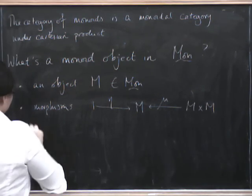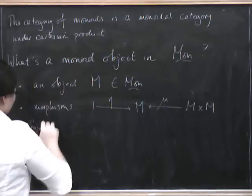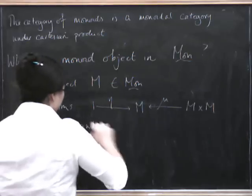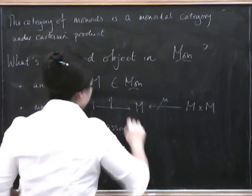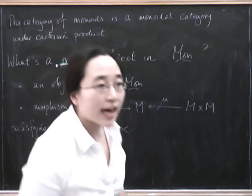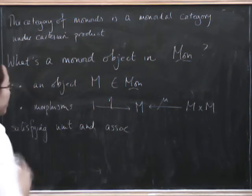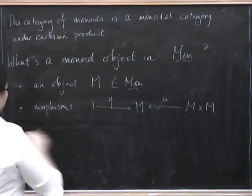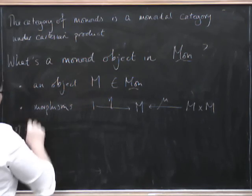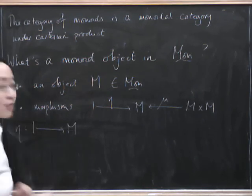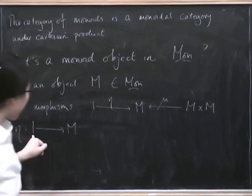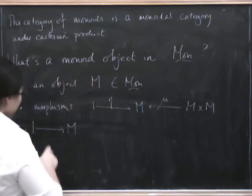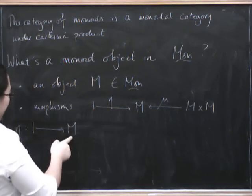satisfying unit and associativity. So first of all, let's see what this eta and this mu are, shall we? So what does eta do? Eta goes from 1 to M, and it has to be a monoid map. So this here is the very trivial monoid, very uninteresting monoid that's just got one object. So all we have to do is pick out an object here.